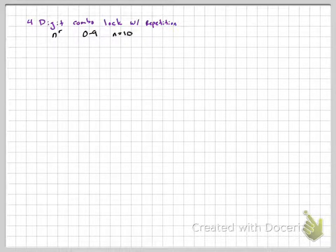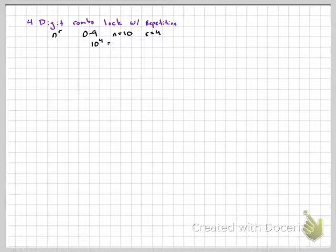So our n is 10, because we have 10 digits to choose from. And our r is 4, so 10 to the fourth power. That's, or just 10 with four zeros. So that would be 10,000.